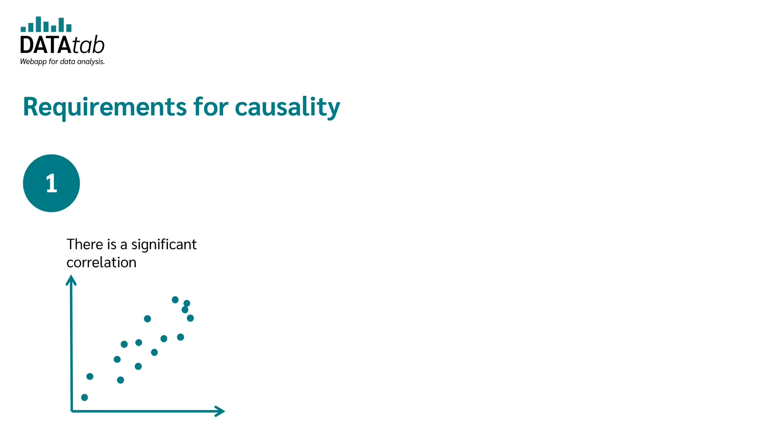First, there is a significant relationship, that is, a significant correlation. This precondition is of course easy to test. We simply take the correlation coefficient and check if it is significantly different from zero.